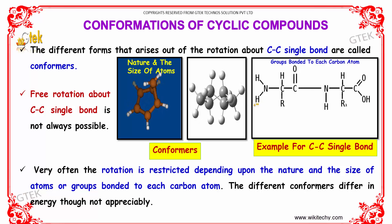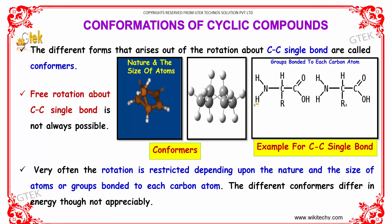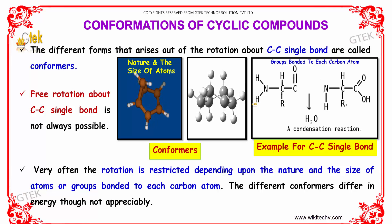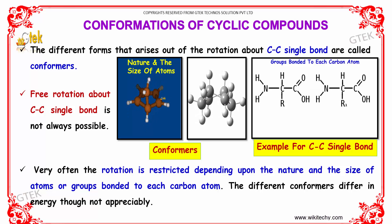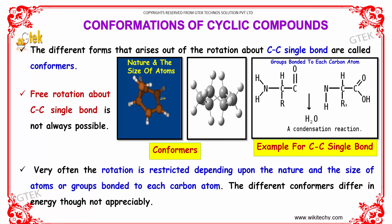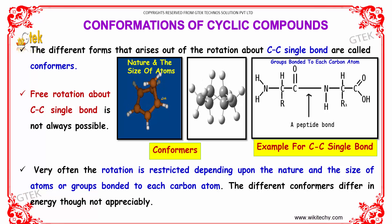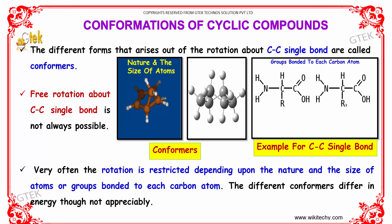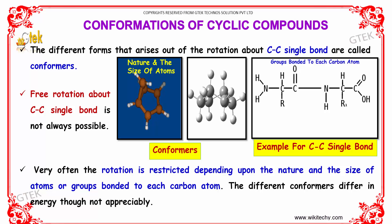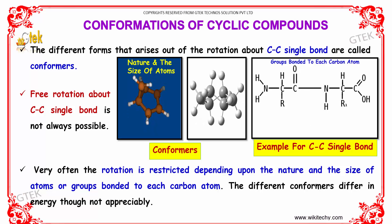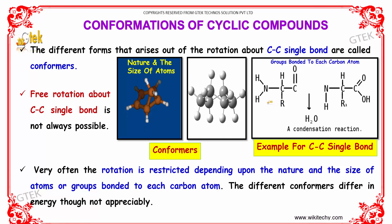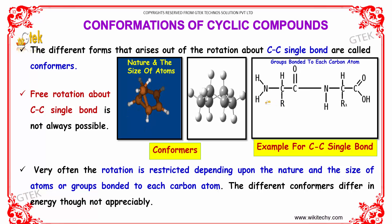Very often, this rotation is restricted depending upon the nature and size of atoms bonded to each carbon atom. Because if the molecular mass of the bonded atom is very high, it creates a steric hindrance for the carbon atom to rotate freely. The different conformers differ in energy, though not appreciably.